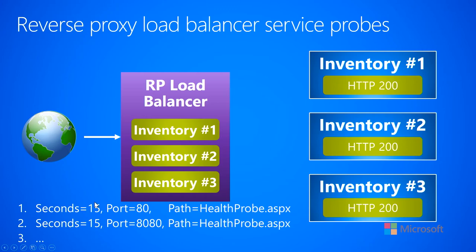I have two rules here, so the load balancer is actually going to probe both ports 80 and 8080 every 15 seconds across all of these machines. Because you can have multiple services listening on each VM, each one would have to be at a different port.